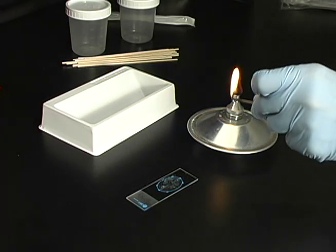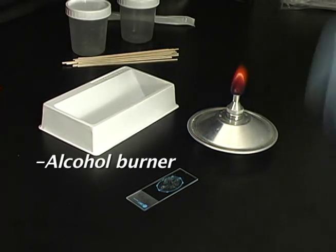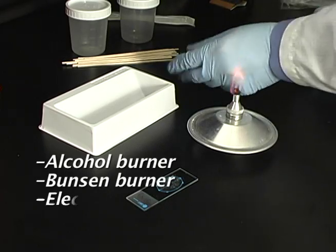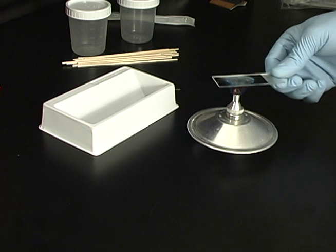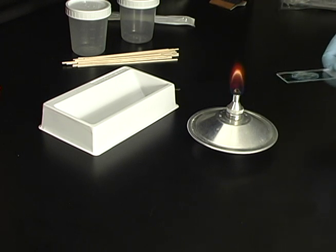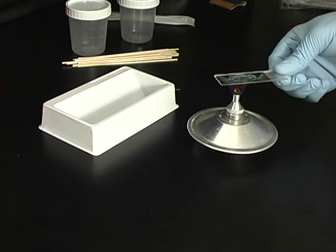Once the specimen has dried on the slide, heat fix the slide using an alcohol burner, Bunsen burner, or electrical heating block. If using a burner, pass the slide through the flame three to four times, being careful not to char the bottom of the slide.